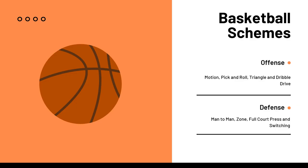Now let's touch on basketball schemes, which are a little different from football. In football, a team usually runs one offense — that's their identity. In basketball, one team could run all of these offenses and defenses because they want to be versatile and apply them to certain situations. So you're not necessarily going to see which offenses are good against which defenses the same way — in the NBA, all teams are running all of these or a variation.